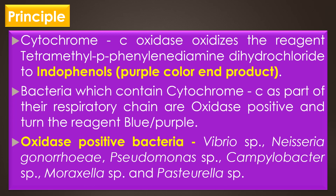When the enzyme is not present, the reagent remains reduced and is colorless. Bacteria which contain cytochrome c as part of the respiratory chain are oxidase positive and they turn the reagent to blue or purple. Organisms lacking cytochrome c as part of the respiratory chain do not oxidize the reagent, leaving it colorless, and are oxidase negative. Examples of oxidase-producing bacteria are Pseudomonas species, Vibrio species, Neisseria gonorrhoeae, Campylobacter species, Moraxella species, and Pasteurella species.